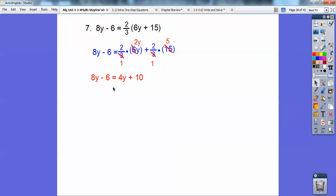And I get 8y minus 4y is 4y. I'm going to add 6 to both sides. Divide by 4 and you get y equals 4. All righty? All right, that's a good job, you guys.